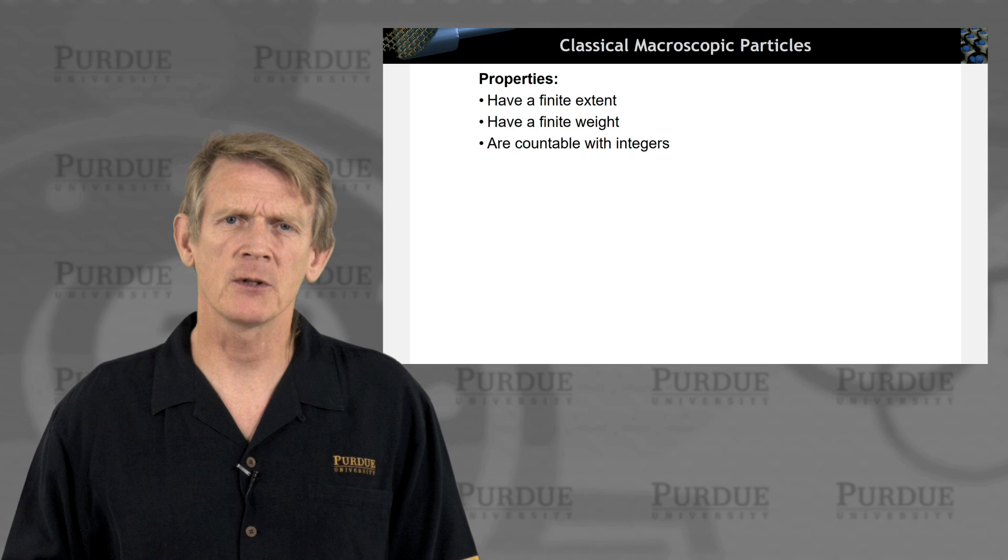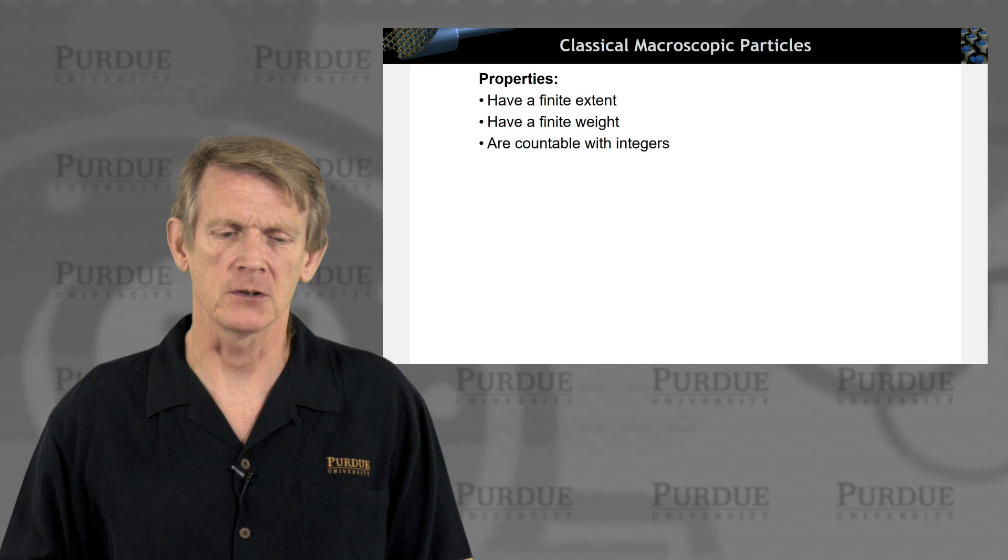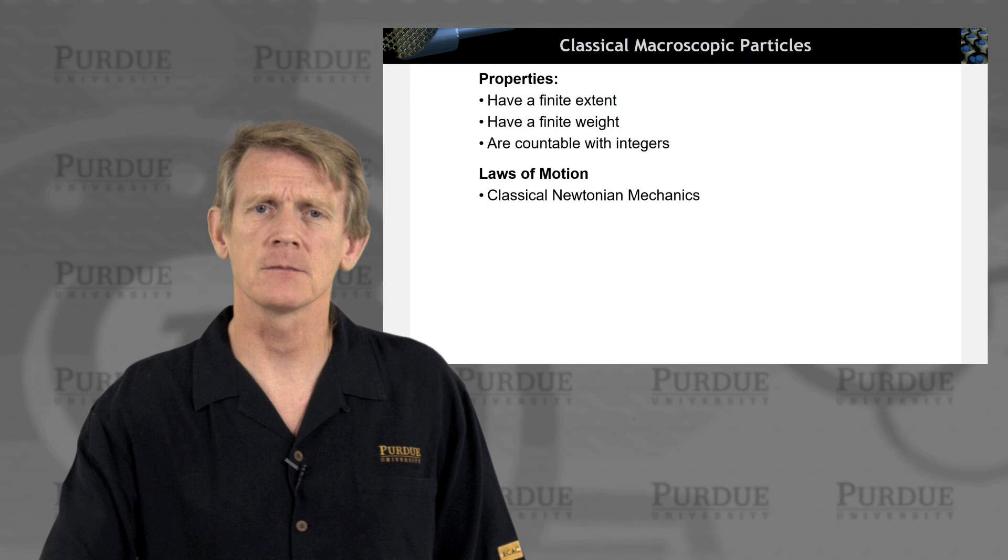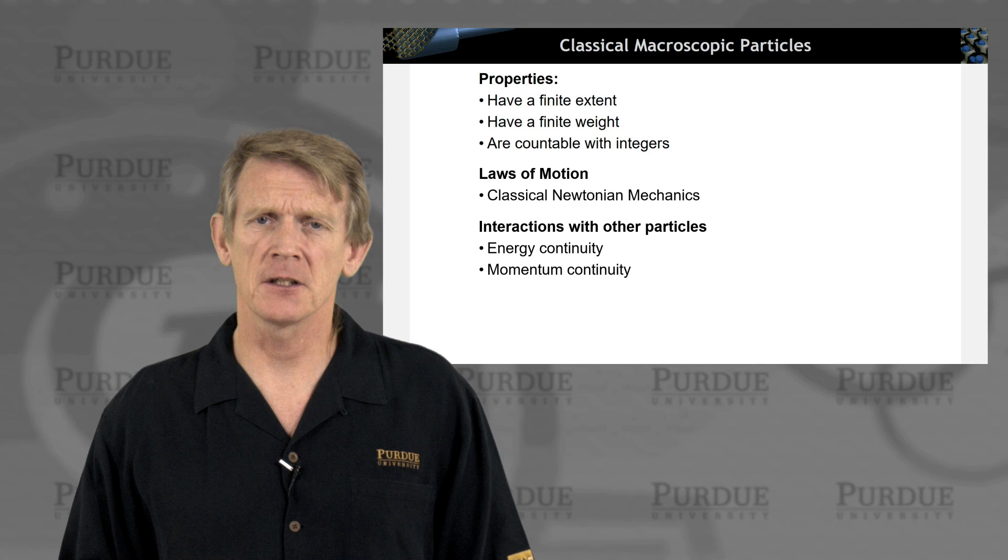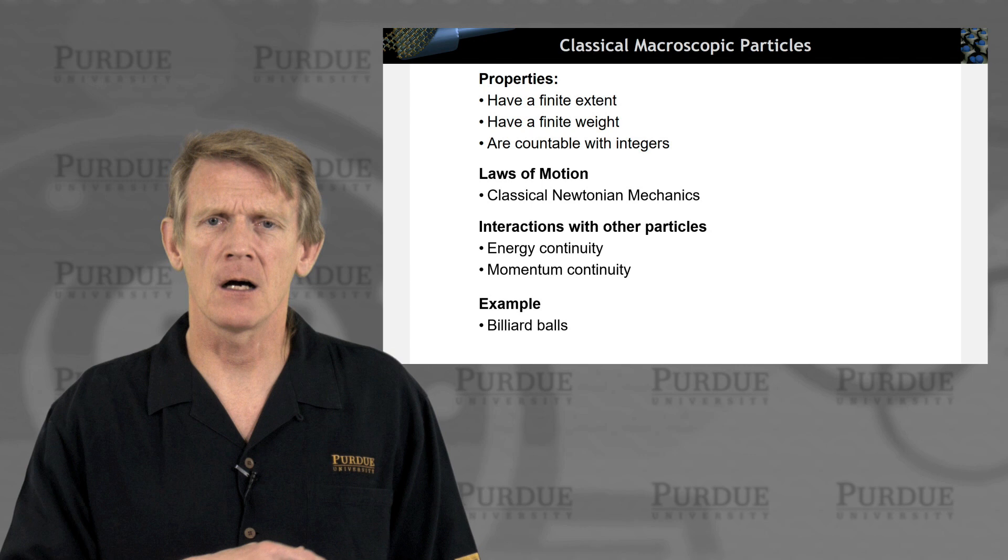Well, that's the stuff we deal with on a day-to-day basis, right? The physical things we can hold in our hands, the cars we drive, they have a finite extent, they have a finite weight, and they are countable with integers. So that's a pretty straightforward way of thinking about macroscopic objects. They obey the classical Newtonian mechanics, and they interact with other particles. And these interactions are governed by energy continuity and momentum continuity. Those are preserved properties for classical particles.